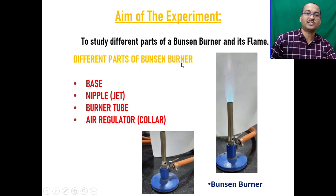The different parts of the Bunsen burner are: base, nipple (or jet), burner tube, and air regulator (also called the collar).